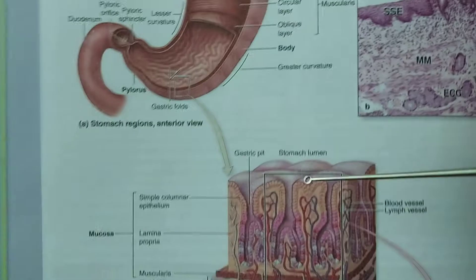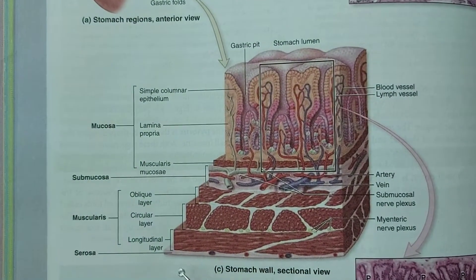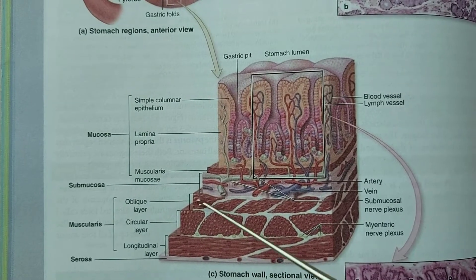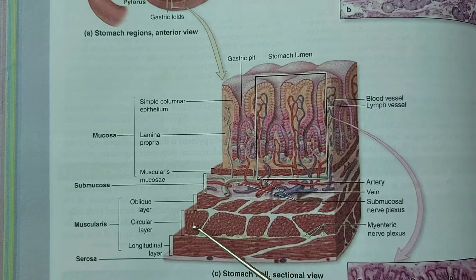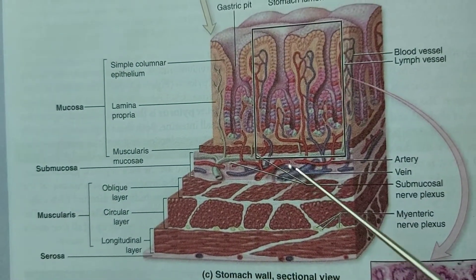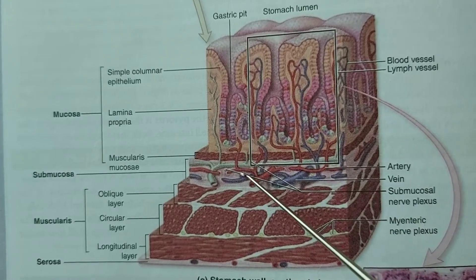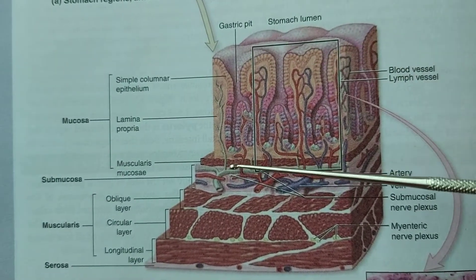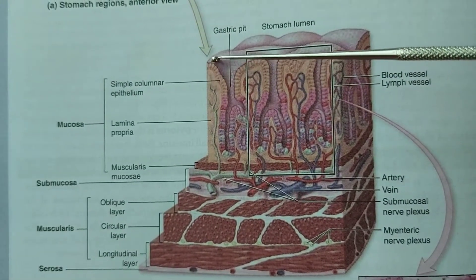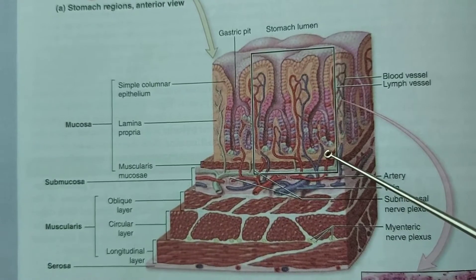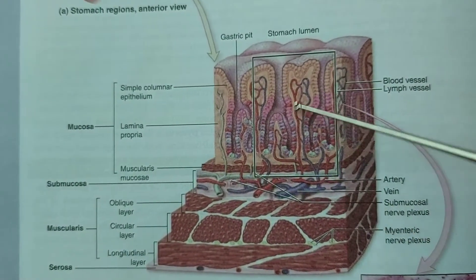Now we will see what is inside the stomach. Here the different layers are visible. On the outside there is the serous layer, then the muscle layer. Here is the outer longitudinal muscle, the middle circular muscle, and the inner oblique muscle. Then the submucous layer, where we can see all the vessels remaining. Here from this point to this point is the mucous layer, which contains the epithelial layer, the lamina propria, and the muscularis mucosa layer.